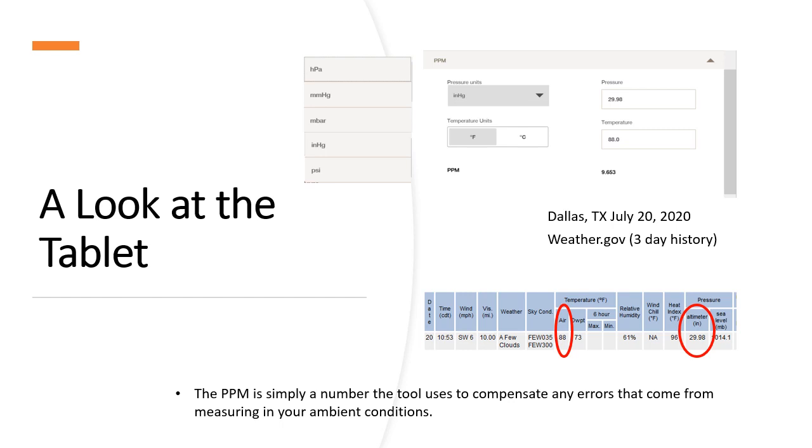But all you need to make sure you do is type in the correct air pressure, type in the temperature, and let the tool do the rest, and you'll be accurate. It's very important to do this, especially before doing a field calibration as well.